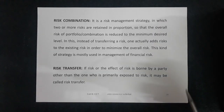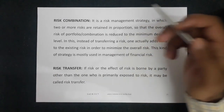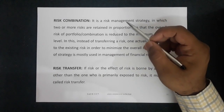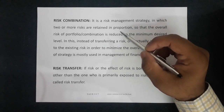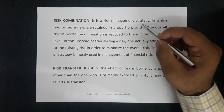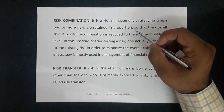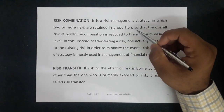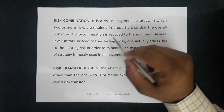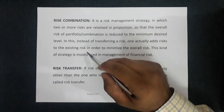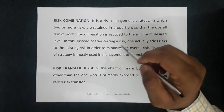The next point is risk combination. It is a risk management strategy in which two or more risks are retained proportionately. This is a risk management strategy where you proportionately retain more risks so that the overall risk of the portfolio combination is reduced to a minimum desired level — the whole risk is reduced to a minimum level.